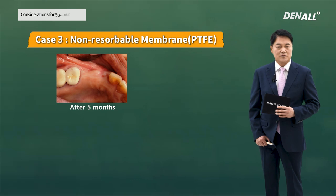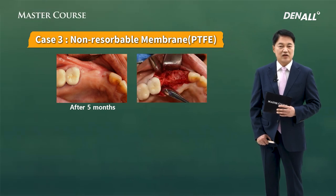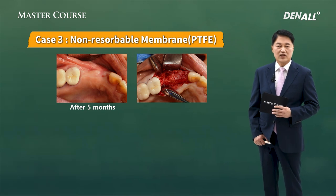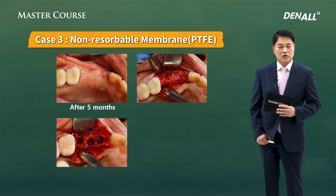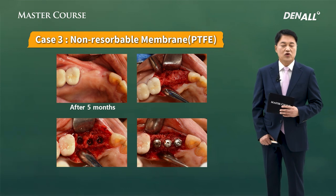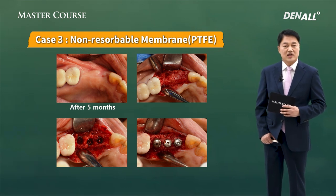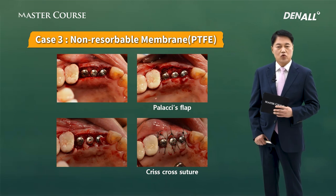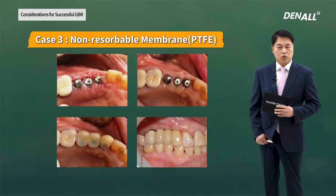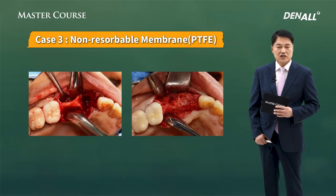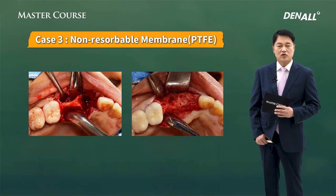Anyway, the membrane was removed and this is five months later when I tried to place the implant. GBR was rather successful and I placed the implant. Additionally, bone graft was done and one-stage surgery was done. I formed the palatal flap and did criss-cross suture. After that, prosthesis was delivered. As you can see, before GBR and after GBR — it was very difficult to place the implant here, so GBR was done appropriately, and now we can see there's no problem in placing an implant.